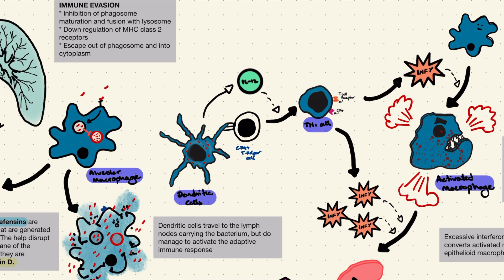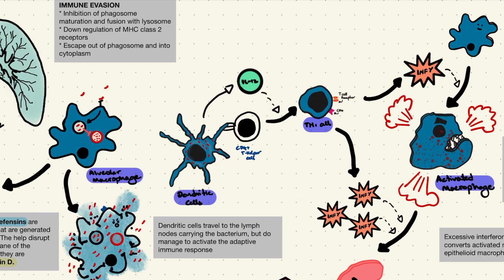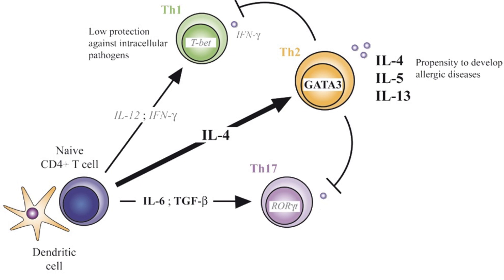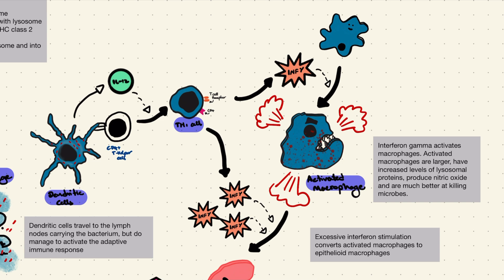Even though TB may seem like a master of disguise, our adaptive immune cells get wind of what's happening, as dendritic cells do present antigens to the appropriate T-cells. This interaction requires three signals: MHC class 2 and T-cell receptor interaction, a co-stimulatory interaction, and a cytokine signal. In our case, the cytokine signal is IL-12, which is needed to help T-helper cells differentiate into Th1 cells. Once the T-helper cell receives all three signals, it becomes a Th1 cell.